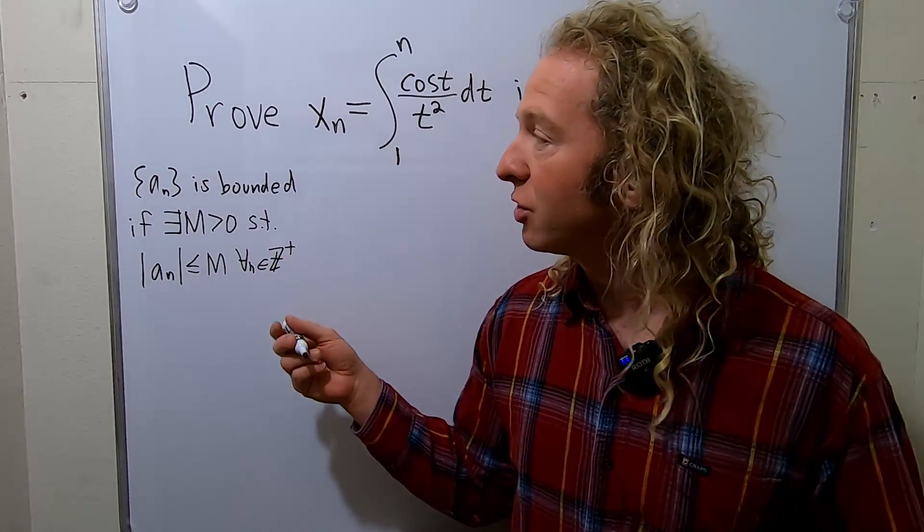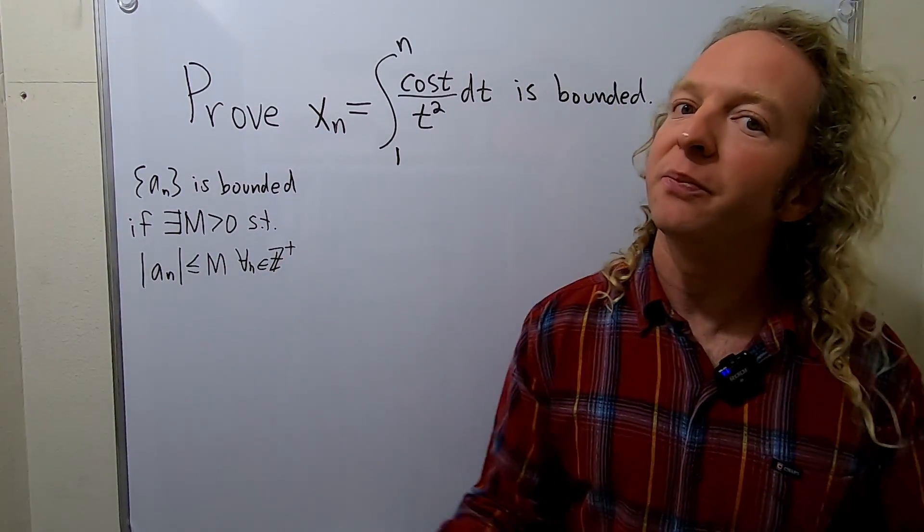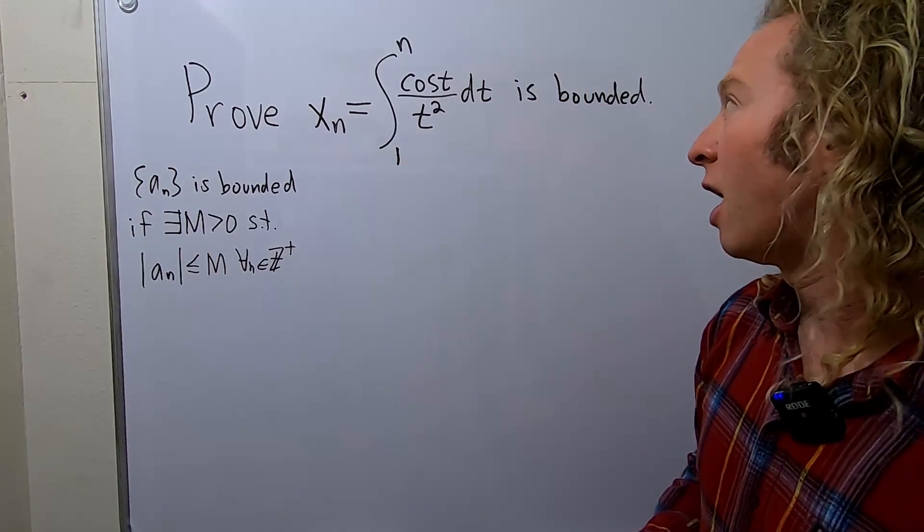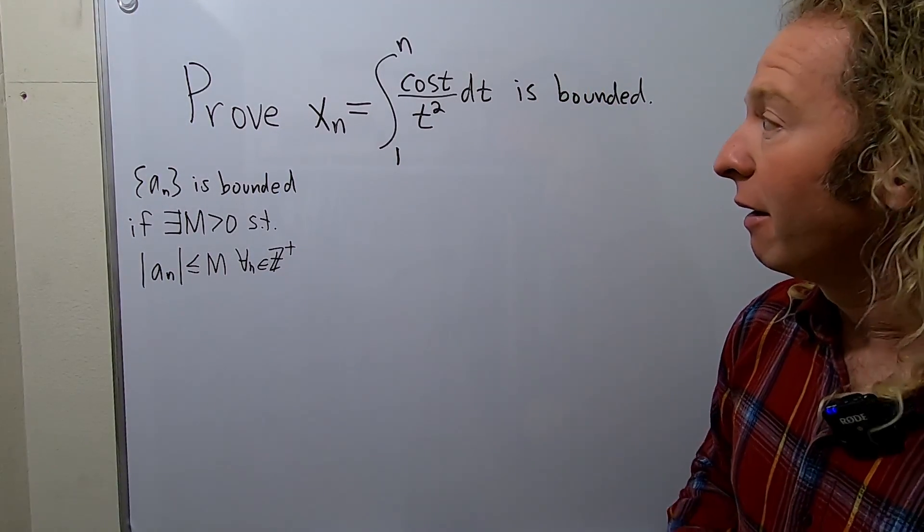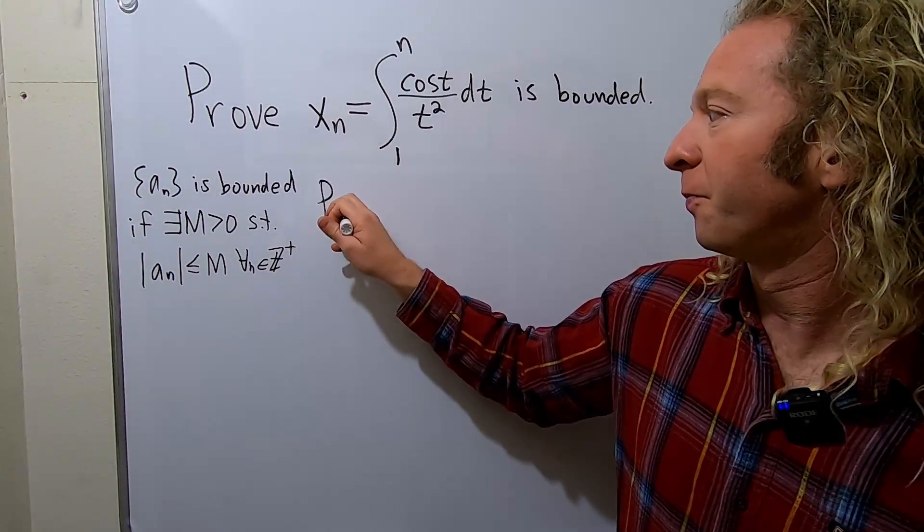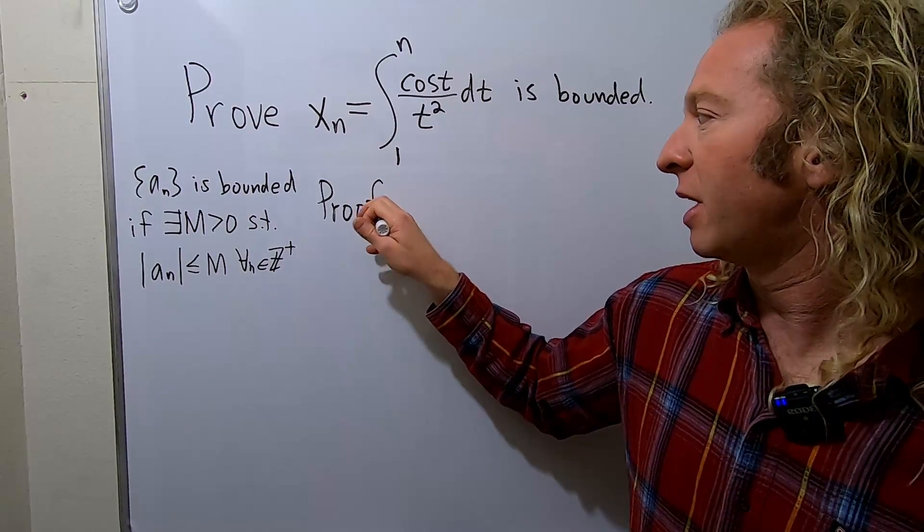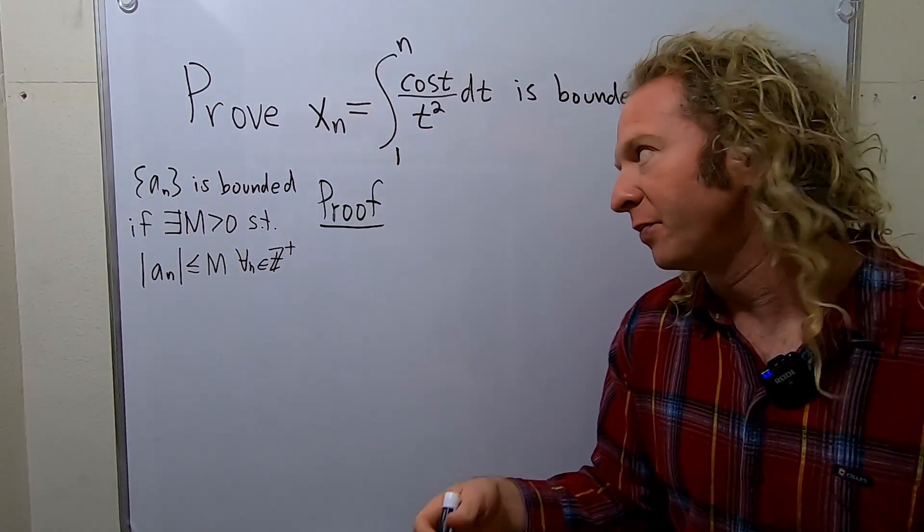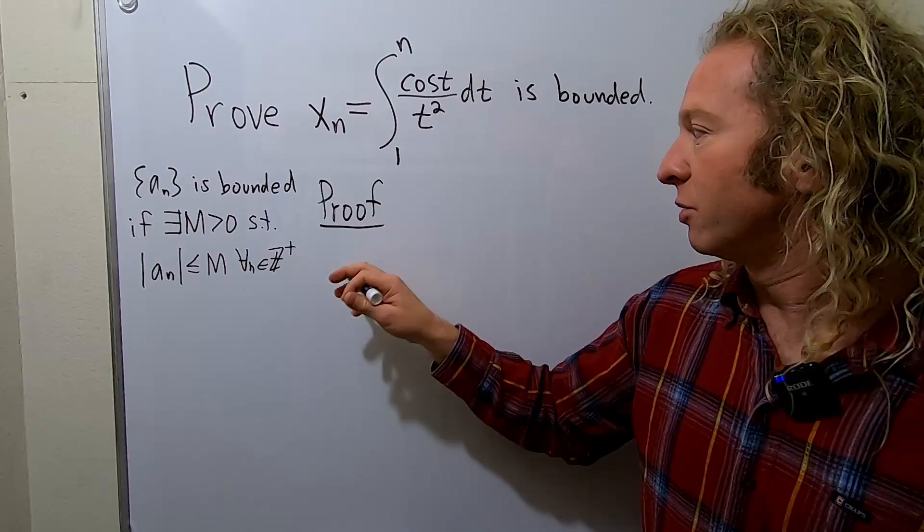Okay, so we basically just have to prove that this is true for this particular sequence at hand. It really shouldn't be too bad. Let's try it. So proof. We'll start by taking the absolute value and we'll just work through it. We should be able to do it. So note,